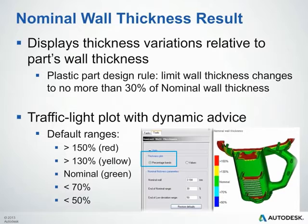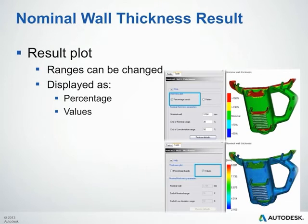Typically in the stoplight patterns, you'll be focusing more on the red and yellow regions and what you can do to help with them. Another option with the nominal wall thickness result is that you can actually change how results are displayed — either as a percentage difference or variation from your nominal wall, or the actual dimensional value.